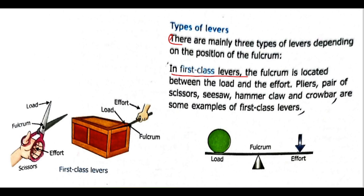Now we will see some examples of lever types. First class lever — example is scissor. In a scissor, you apply the load on one side where you cut, and the machine works at the load point.